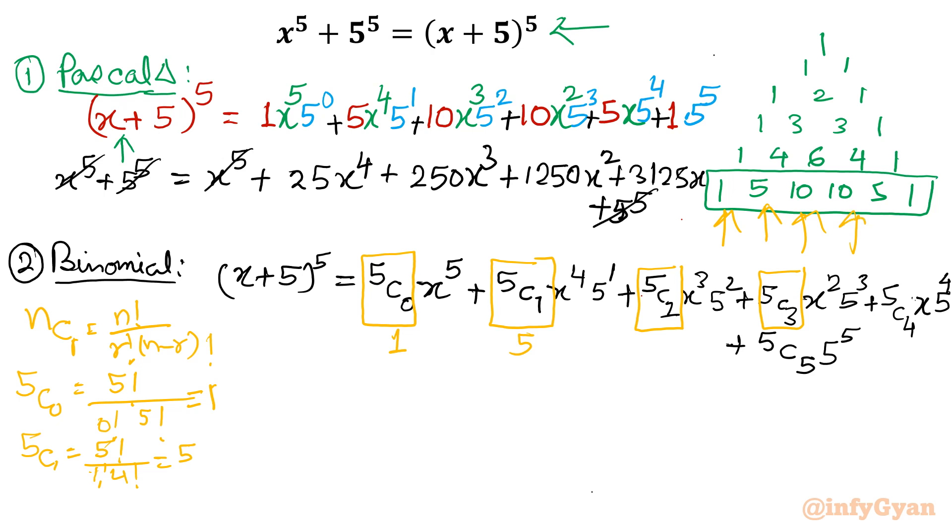You can check: 5!/(2!·3!) = 10, and 5!/(3!·2!) = 10. 5C4 is the same as 5C1, value is 5. And last value 5C5 is same as 5C0, that value is 1. So same result you will get as we calculated through Pascal's triangle.